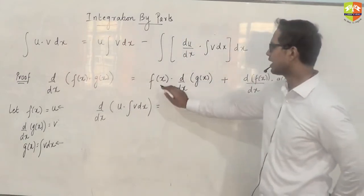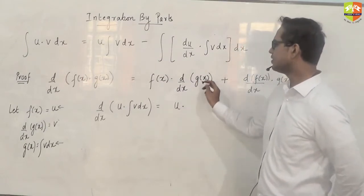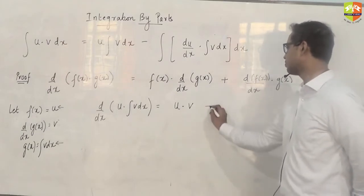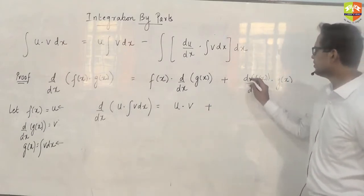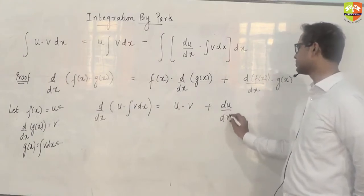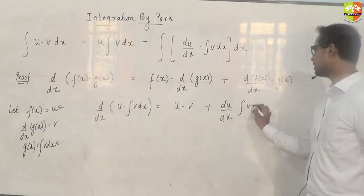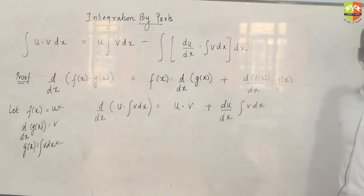What will happen on the right side? f(x) is u, derivative of g(x) is V. Plus derivative of f(x) is du/dx, and g(x) is integral of V.